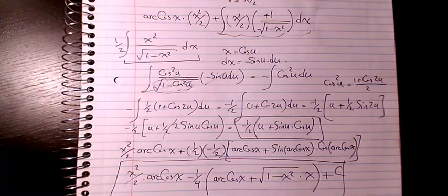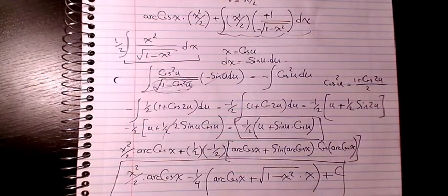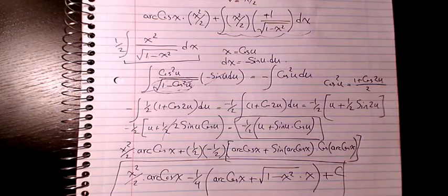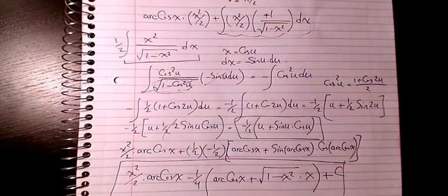So we used both integration by parts and integration by substitution, along with some trig identities, and that's the final answer. Please leave a comment if you have any questions. I hope you like this video — please don't forget to subscribe to the channel, and I'll see you in another video later on.